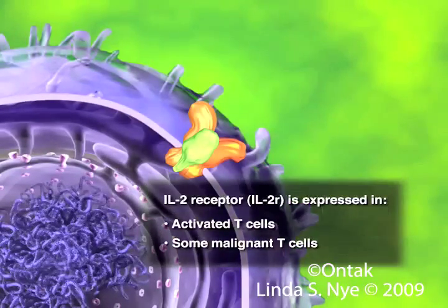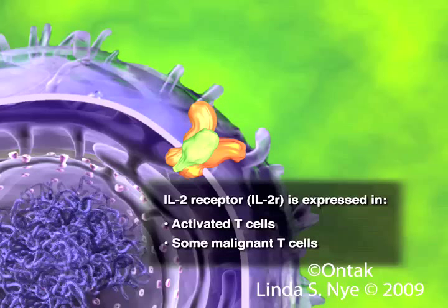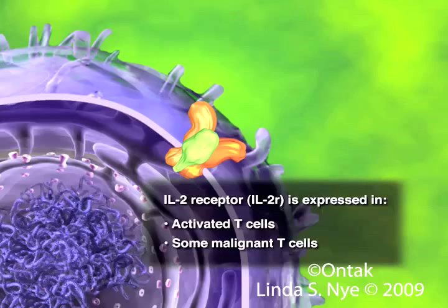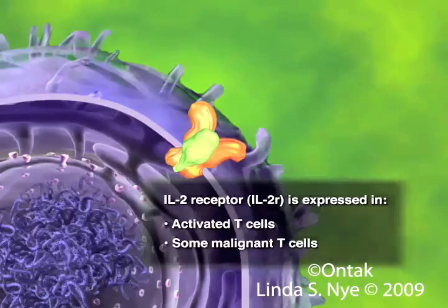The IL-2 receptor (IL-2-R) is expressed in activated T cells, including regulatory T cells. The malignant cells in cutaneous T cell lymphoma (CTCL) have been shown to express high affinity IL-2 receptors, providing a possible drug target. As among normal cells, the high affinity form of the receptor is usually found only on activated T lymphocytes and activated macrophages.